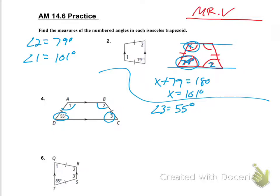We need to find angle one on this line right here. That line is going to work the same as before in problem number two. Let's just call angle one x. So x plus 55 is equal to 180. I would subtract 55 from each side, and 180 minus 55 equals 125. So x is equal to 125, meaning angle one is equal to 125.